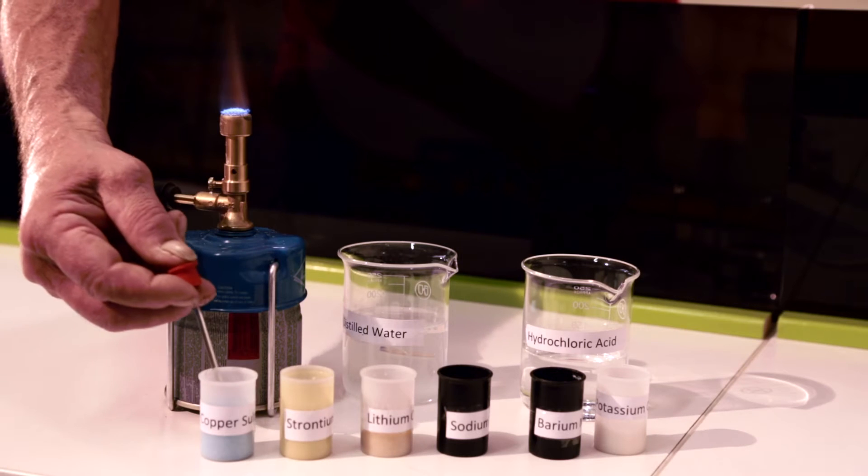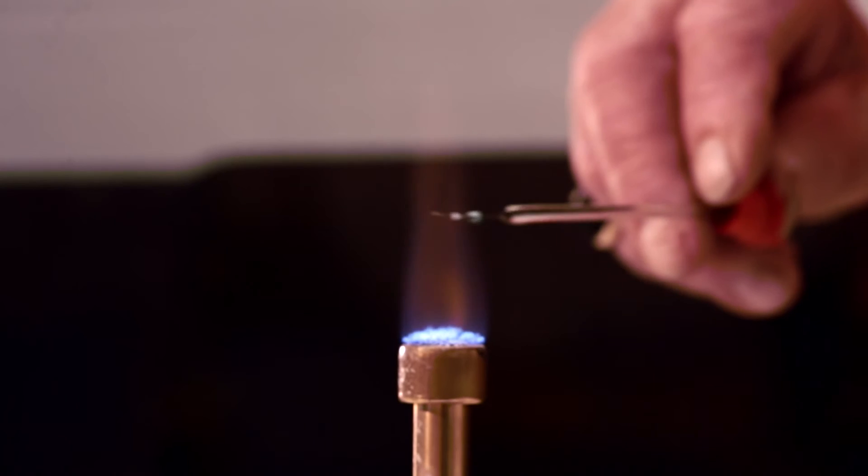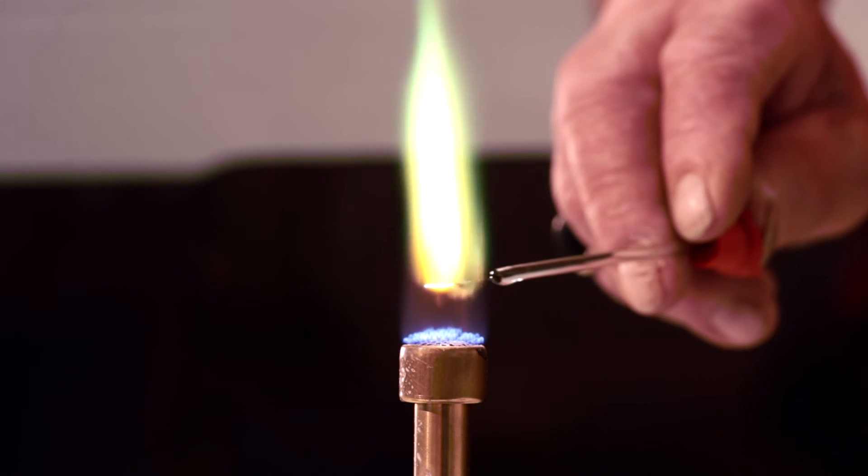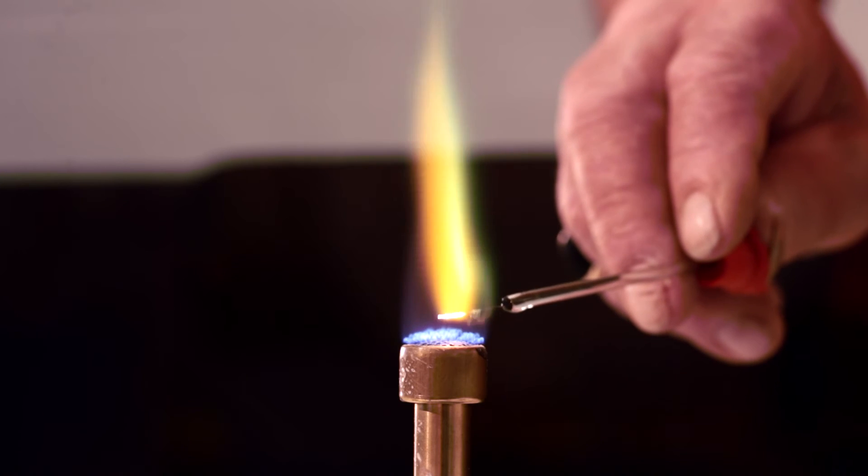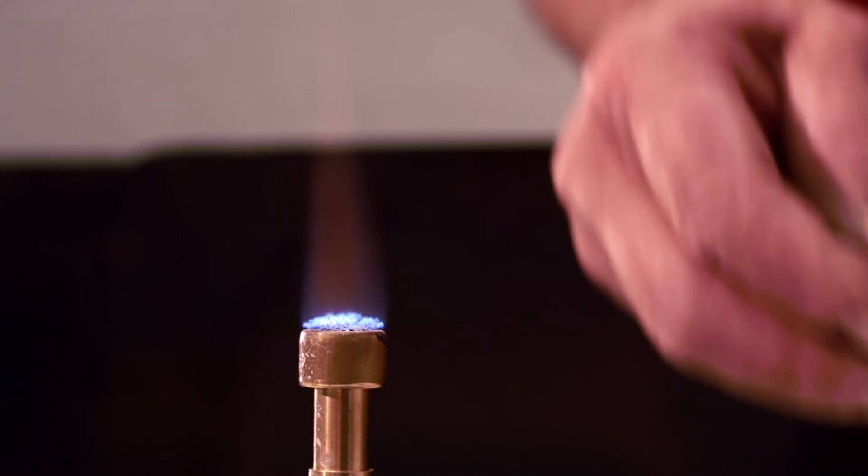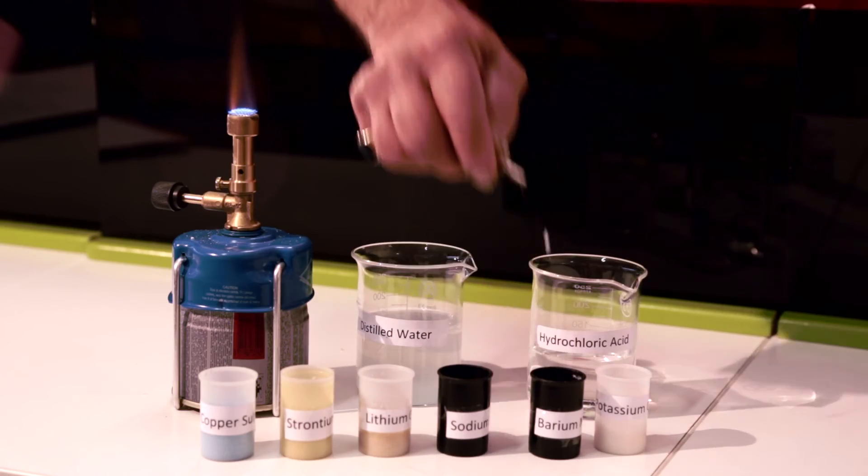Dip the wire section into the solid salt or a solution of the salt and hold the wire with the salt in the flame. Observe the color of the flame and determine which cation is present. Clean the wire as before and repeat the test using the other salts which are listed.